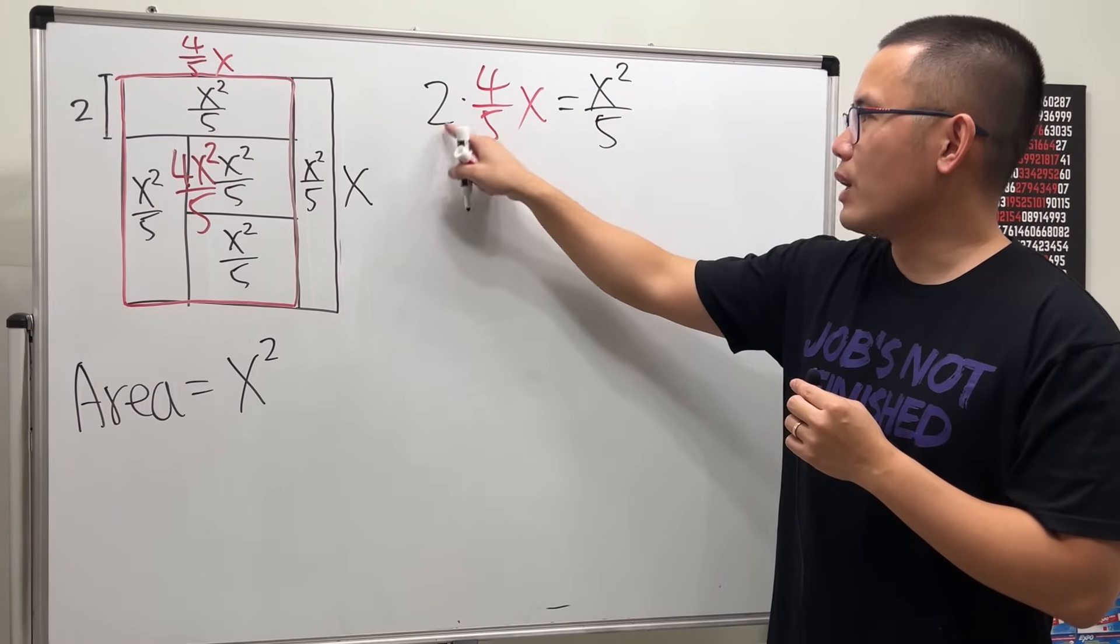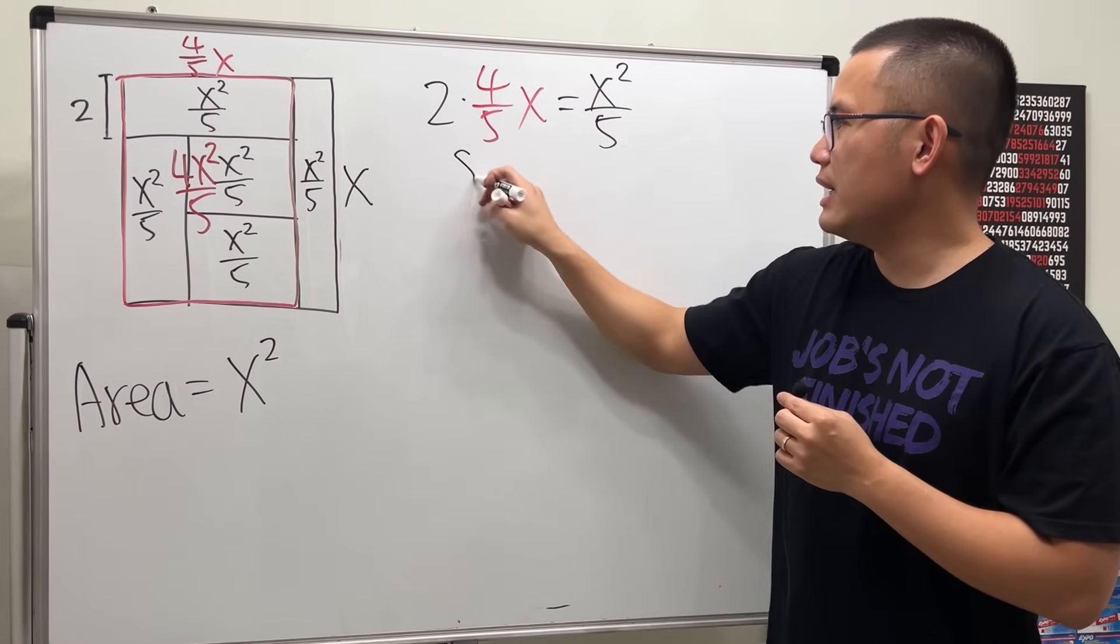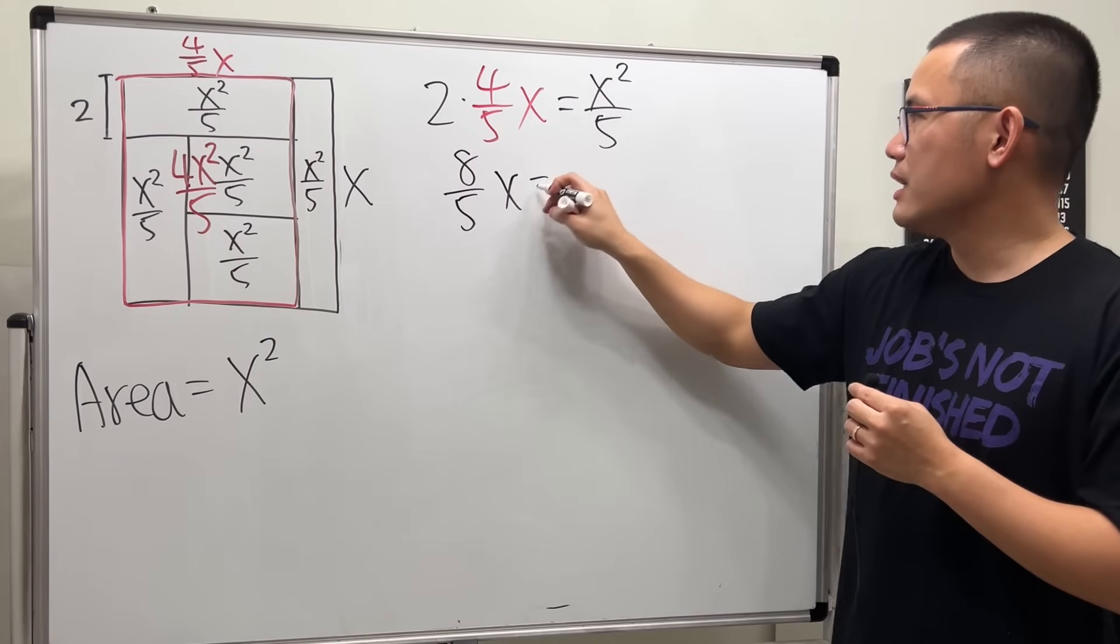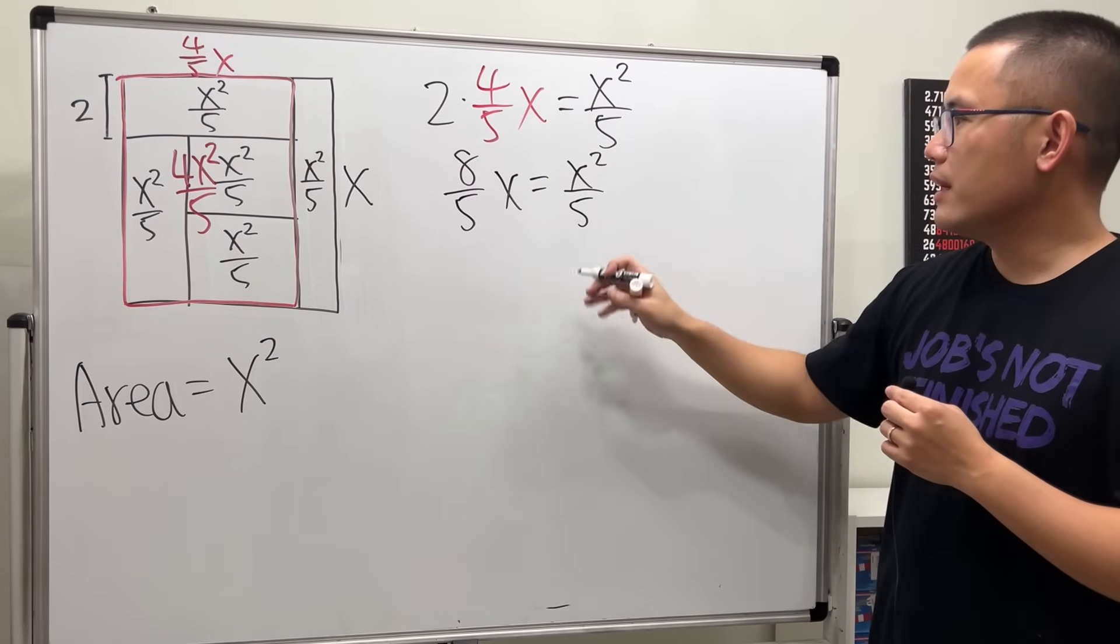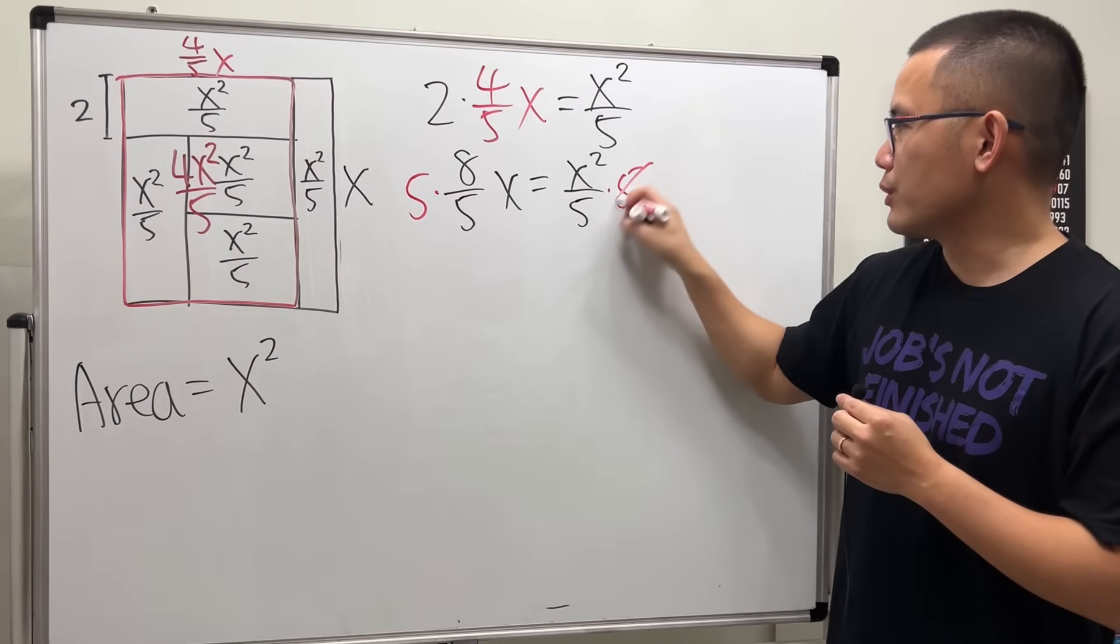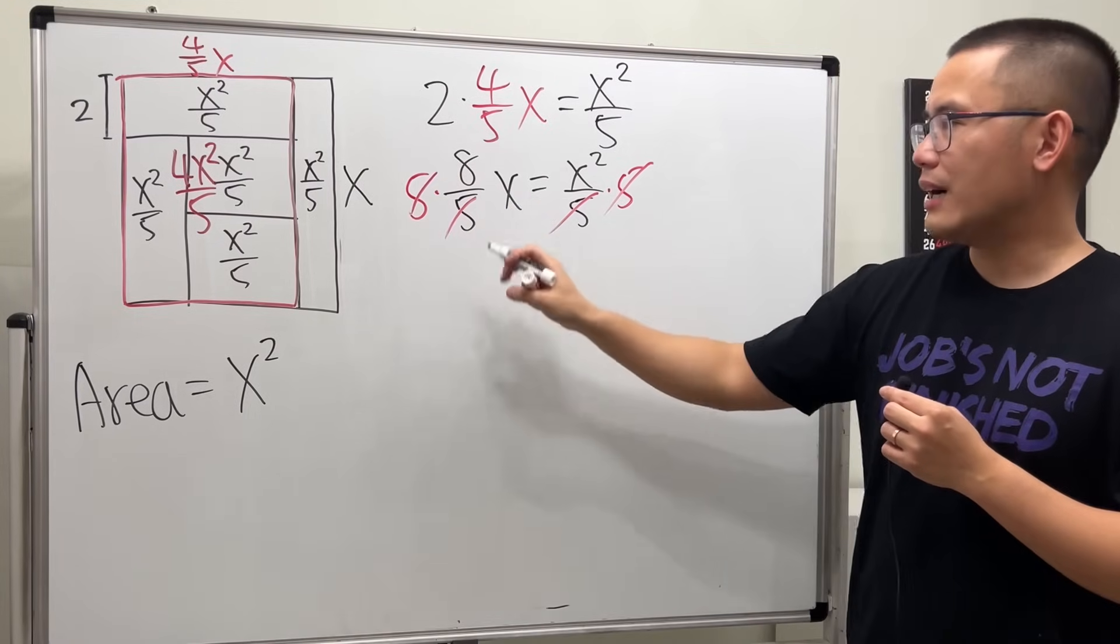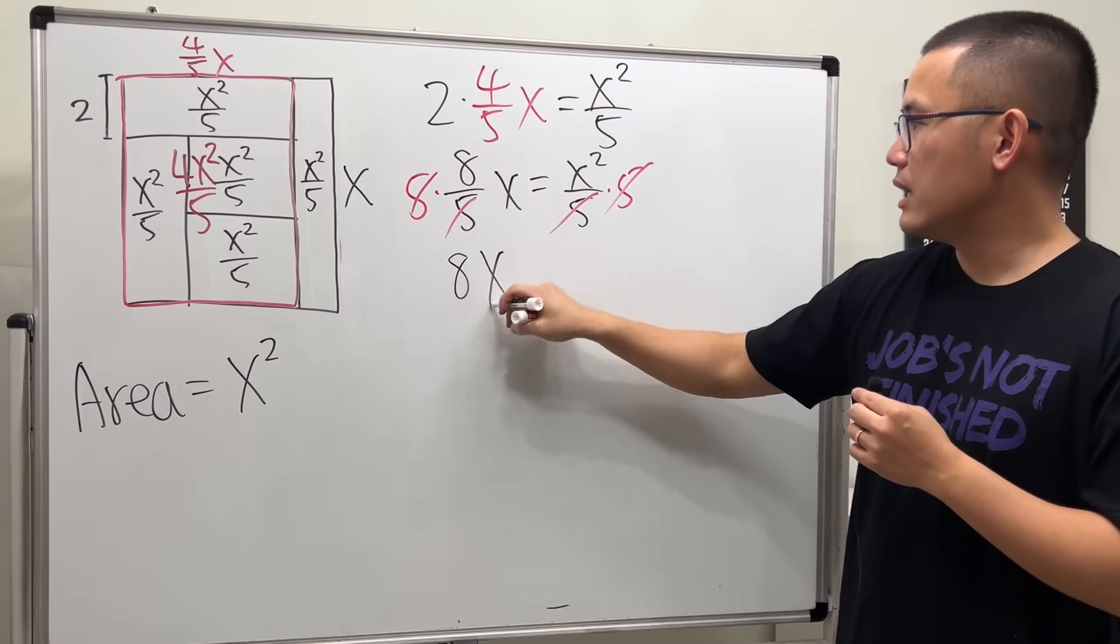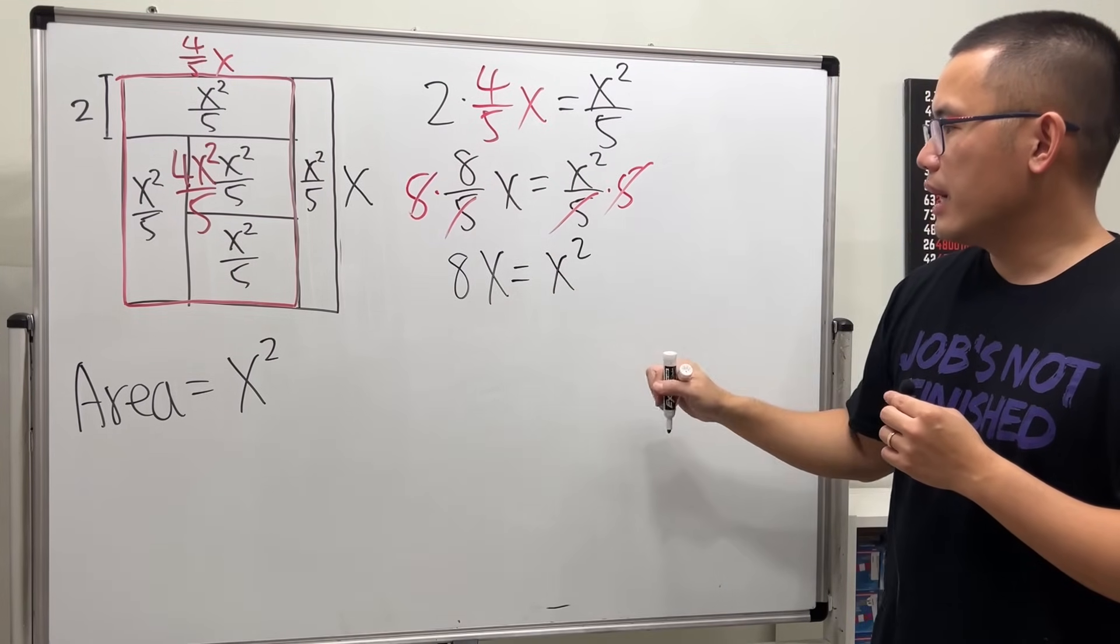So this is like 2 over 1 times 4 over 5, so this is 8 over 5x equals x squared over 5. Multiply both sides by 5, so they cancel and we have 8x equals x squared.